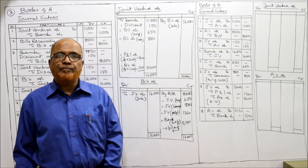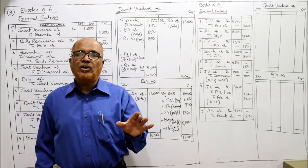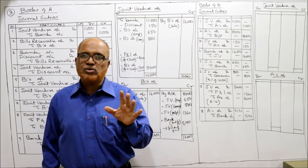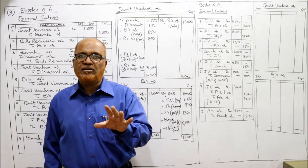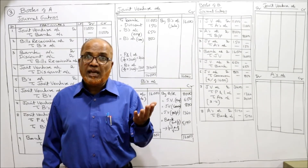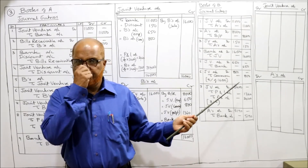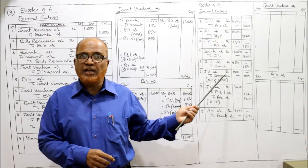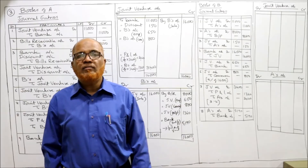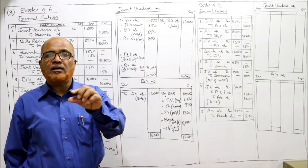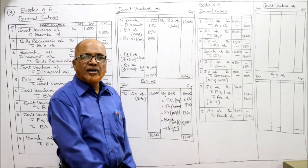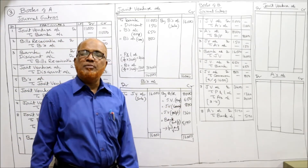Commission: B is entitled to a commission of 5% on sales. 16,000 ka 5% equals 800 rupees commission. Commission is an income for B, so credit commission. Entry: Joint Venture Account Dr. to Commission Account - 800 rupees - being the commission due on joint venture.